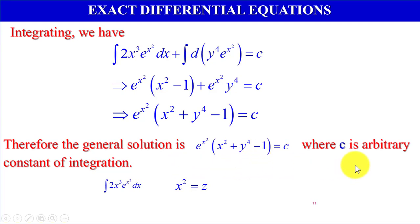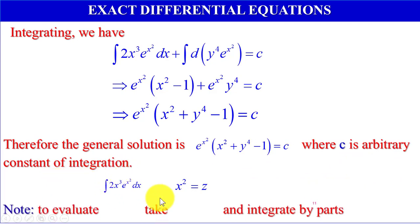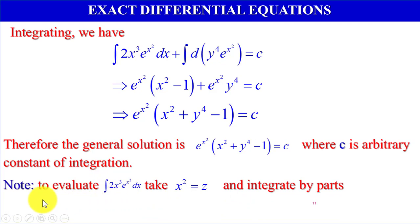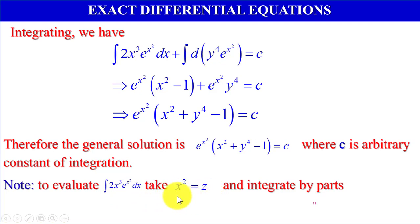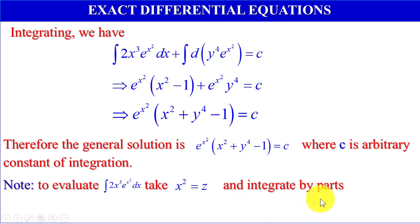Note: To evaluate the integration of 2x cubed e to the power x squared dx, take x squared equals z, then 2x dx becomes dz. After simplifying, we can integrate this equation by parts.